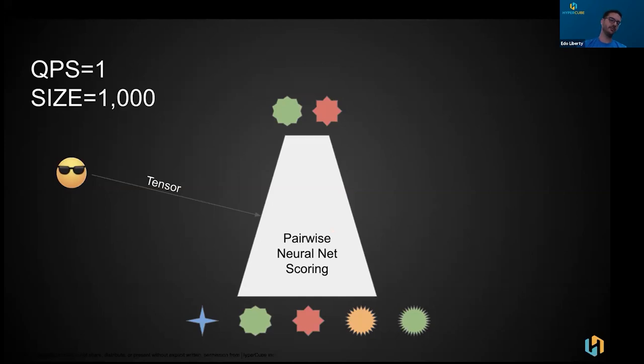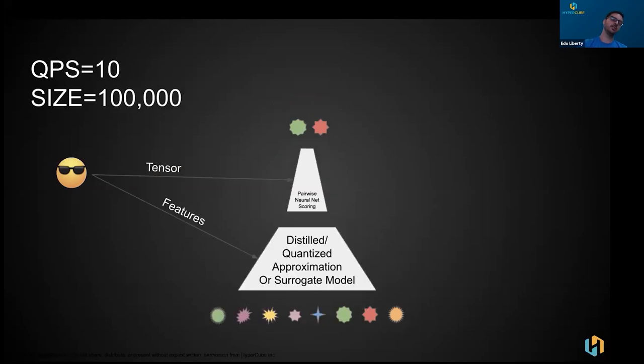Well, that kind of works if you have roughly a thousand items in your catalog and you have one query per second. If your model isn't too huge, you can just sweep over everything and score everything. Every time there's a query, not very performant, but probably fine. When you have more items in your catalog, about a hundred thousand, maybe 10 QPS, this is a pretty small use case.